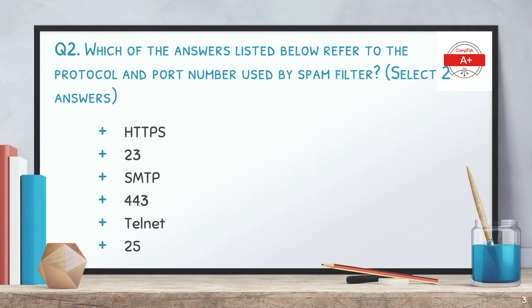Question number two: which of the answers listed below refer to the protocol and port number used by a spam filter? We have to select two answers. The options are HTTPS 23, SMTP 443, Telnet, and 25. The correct answers are SMTP (Simple Mail Transfer Protocol) and port number 25. For a spam filter, we use SMTP, which uses TCP port number 25.